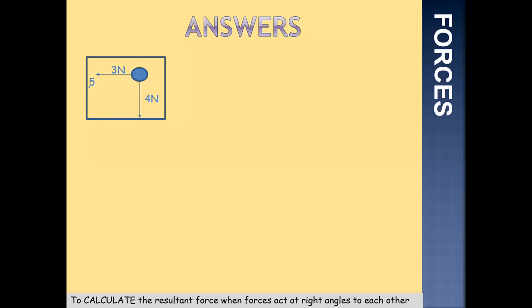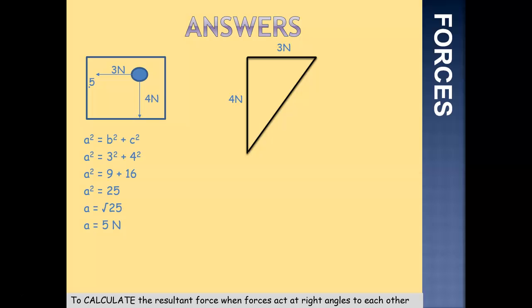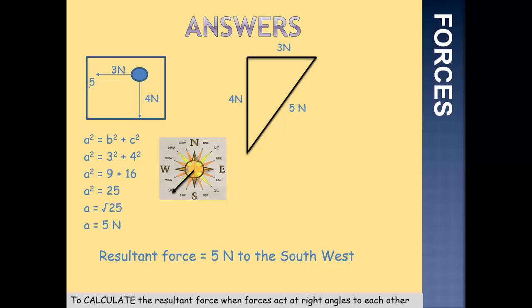Question 5: 3 newtons acting to the west and 4 newtons acting to the south. The first step is to draw our triangle — 4 newtons to the south, 3 newtons to the west — and our hypotenuse shows the direction of the resultant force. We place those into Pythagoras: A squared equals B squared plus C squared, so 3 squared plus 4 squared — 3 squared is 9, 4 squared is 16. 9 plus 16 gives us 25. The square root of 25 gives us A, which is 5 newtons. Looking at our compass points, it's acting to the west and to the south — a southwesterly direction. Our resultant force is 5 newtons to the southwest.